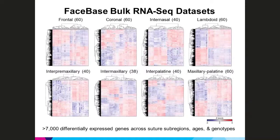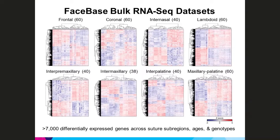Currently we have data sets for eight sutures deposited in FaceSpace, represented here by heat maps derived by hierarchical clustering of differential gene expression across all suture sub-regions, ages and genotypes within each data set. These comparisons are more complex than a simple pairwise comparison as they include all conditions. There is clear differential expression across sub-regions between samples in each data set, and overall we see about 7,000 differentially expressed genes across all data sets.